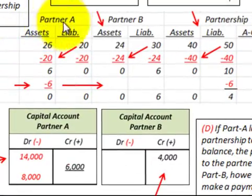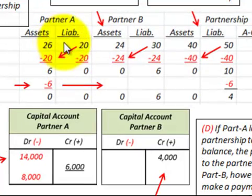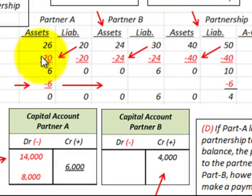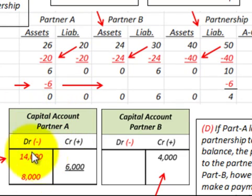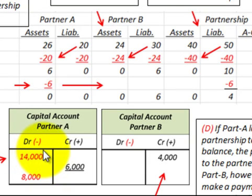First, we offset liabilities with assets. Partner A has assets of $26,000 less $20,000 in liabilities, giving a balance of $6,000 in assets. The next thing to note is Partner A's capital account — they start with a debit balance of $14,000, meaning a negative balance in their capital account.